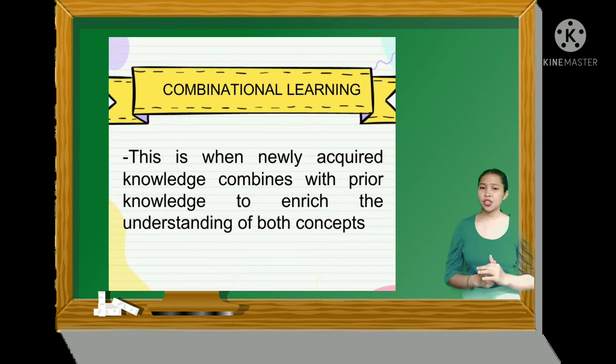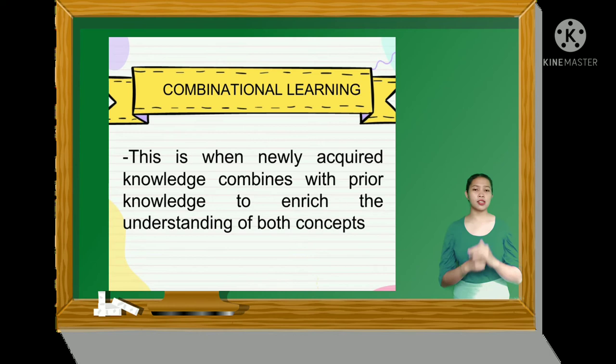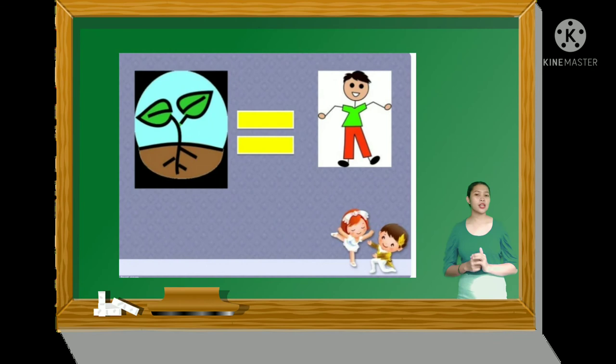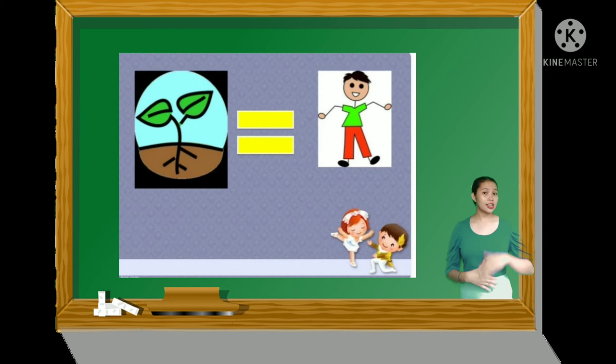Combinatorial learning is when newly acquired knowledge combines with prior knowledge to enrich the understanding of both concepts. It describes a process by which a new idea is derived from another idea that is neither higher nor lower in the hierarchy. For example, to teach someone about how plants breathe, you might relate it to the previously acquired knowledge of human respiration — where humans inhale oxygen and exhale carbon dioxide. Those are the four processes for meaningful learning.